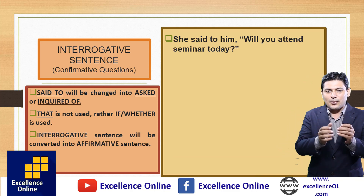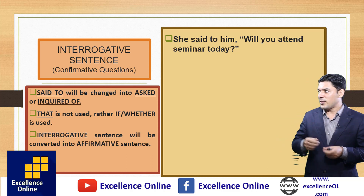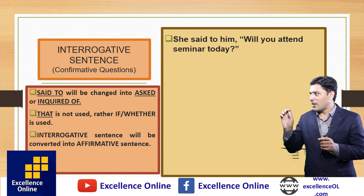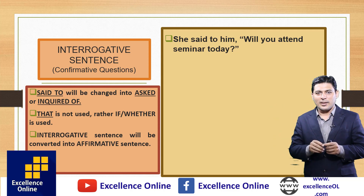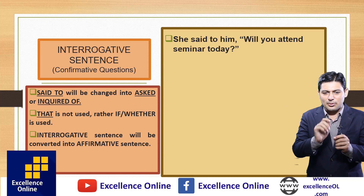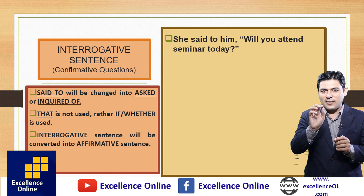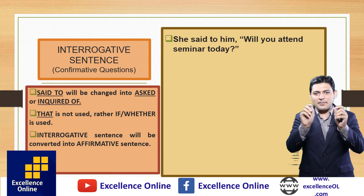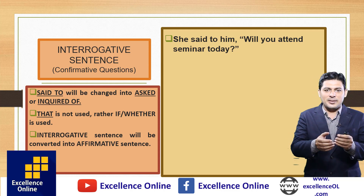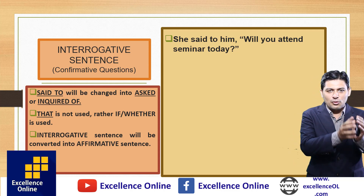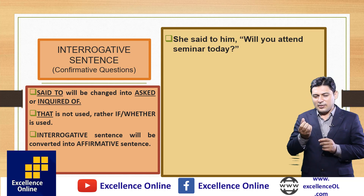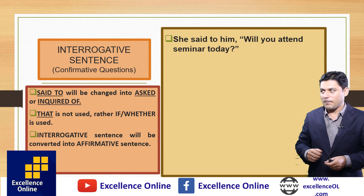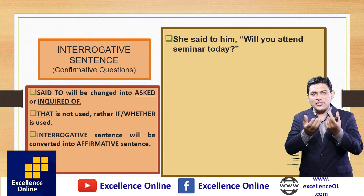Today we are going to discuss interrogative sentences in narration — how to change them. Consider the example: 'She said to him, will you attend seminar today?' This starts from the helping verb 'will,' not a WH word. So this is a confirmative question. The first basic rule is that 'said to' will be changed into 'asked,' 'inquired of,' or 'interrogated.'